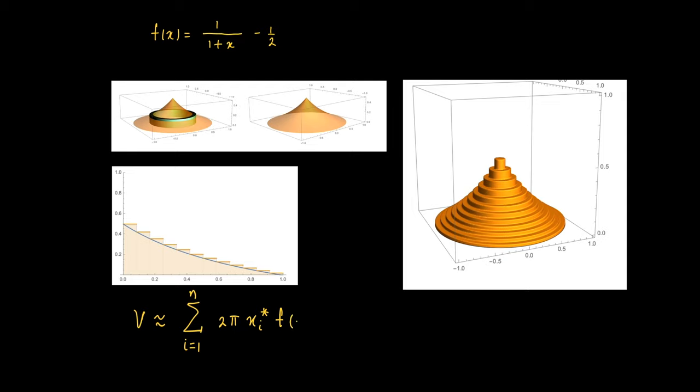If we sum the volumes of each of those circular cylindrical shells, then we get a sum like this: the sum from i equals 1 to n of 2 pi x_i star f(x_i star) delta x.